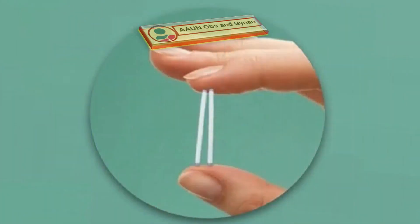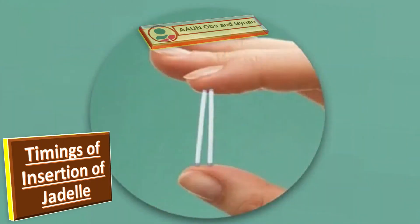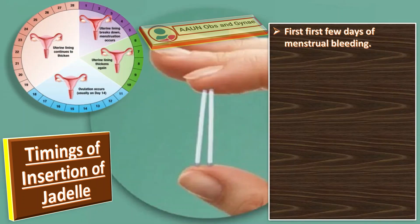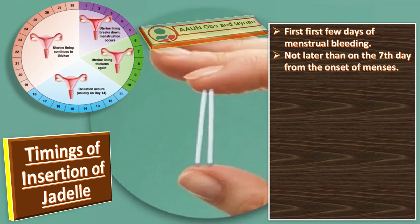Insertion should preferably be performed during the first few days of menstrual bleeding and not later than seven days from the onset of menses. A gynecological examination should be performed before insertion, as always before starting hormonal contraceptives. If the patient has no contraindication to progestin-only contraception and no allergy to antiseptic or anesthetic, the implant can be inserted.